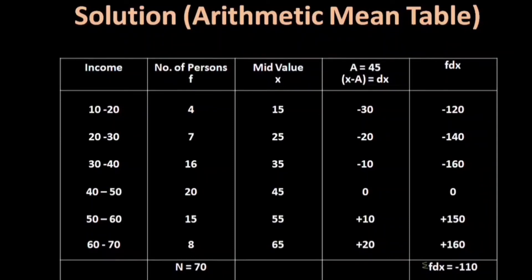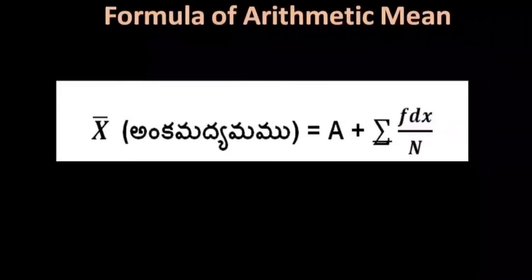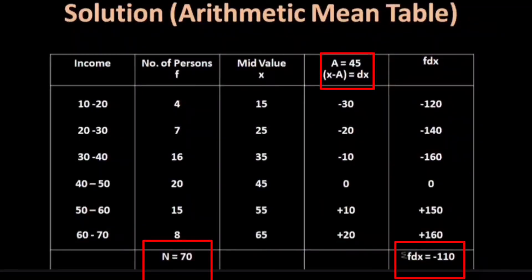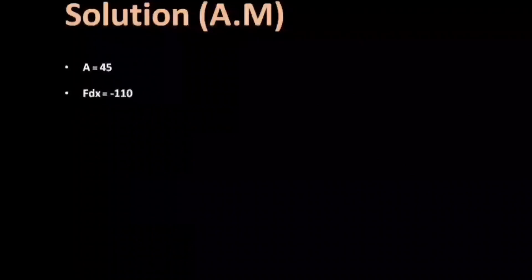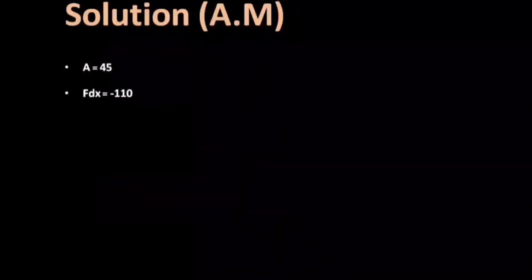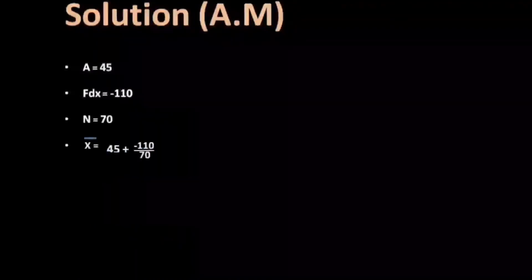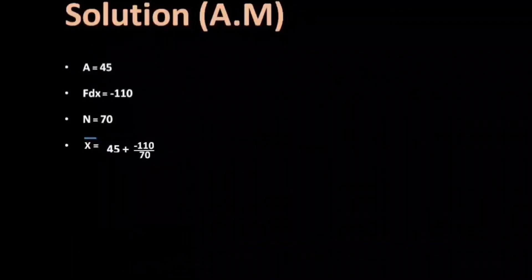The formula is: Mean equals A plus sigma FDX divided by n. A is equal to 45, sigma FDX is equal to minus 110, and n is equal to 70. So mean equals 45 plus minus 110 divided by 70, which equals 45 minus 1.57.